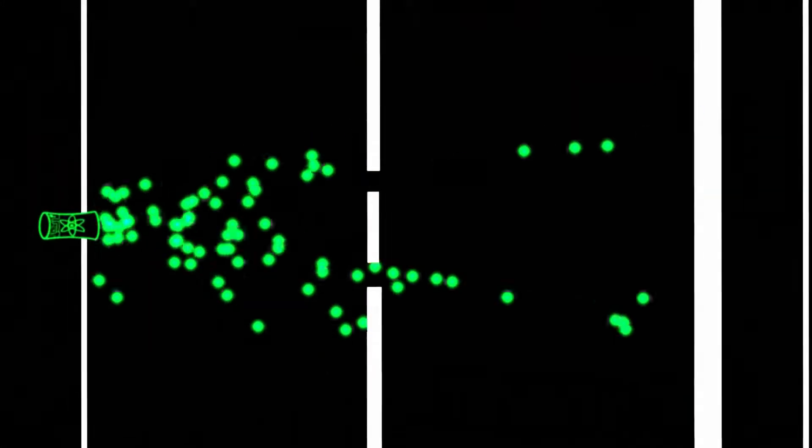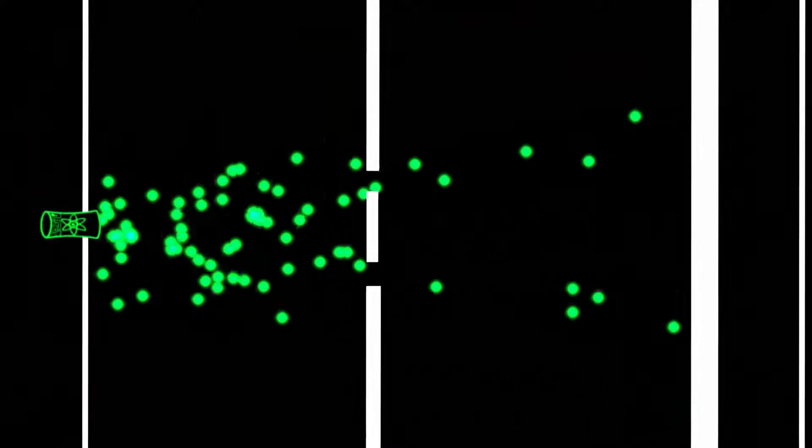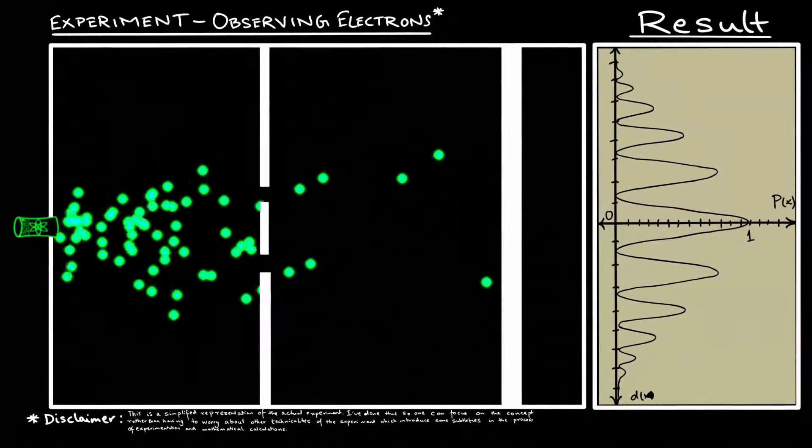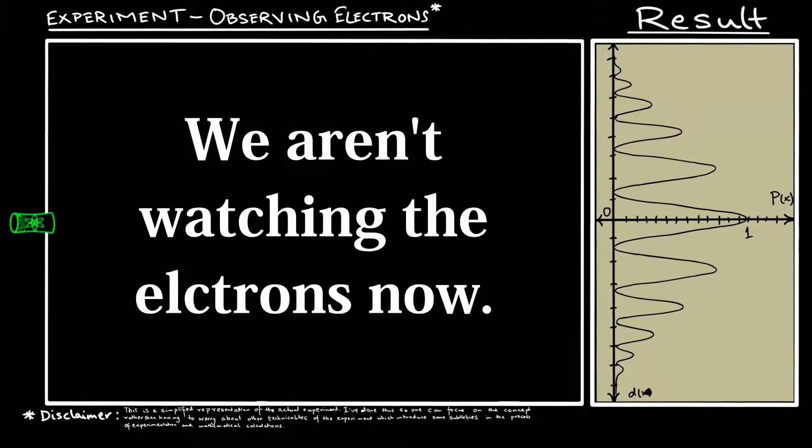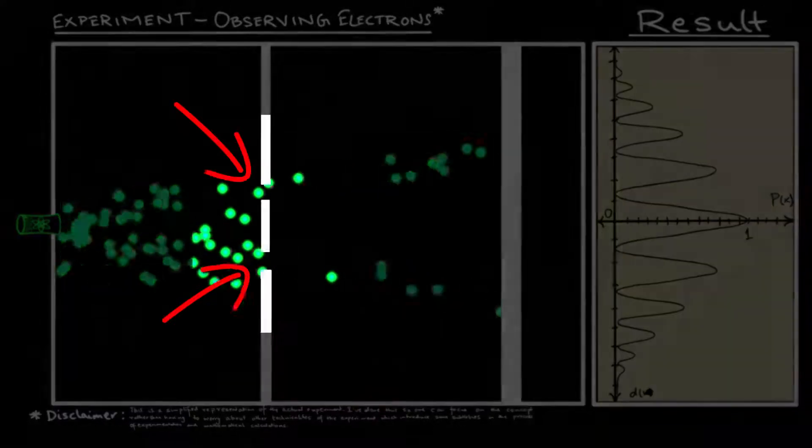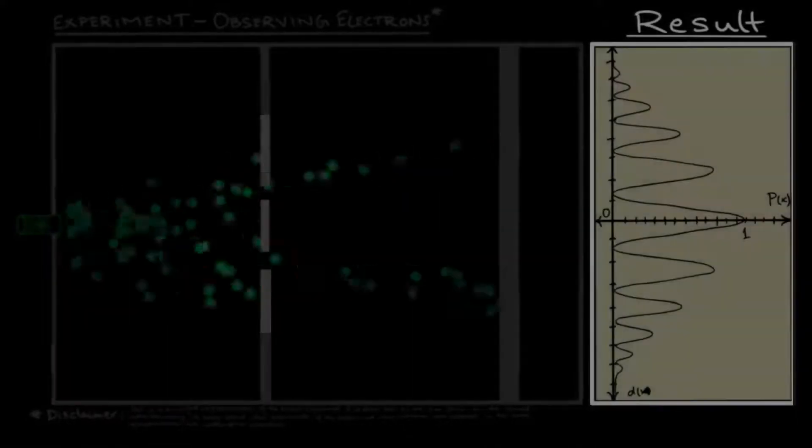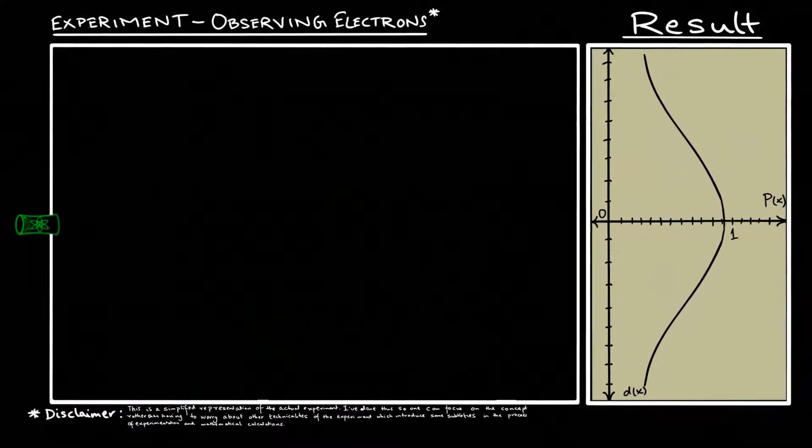Now in a double slit experiment like this, physicists always observed a wavy interference pattern when they didn't watch through which slit the electrons passed. But when they did watch which slit they pass through, the interference pattern disappeared. It's almost as if the electrons knew when they were being watched.